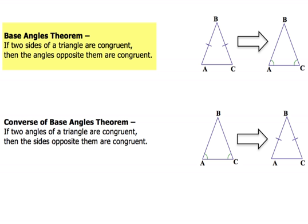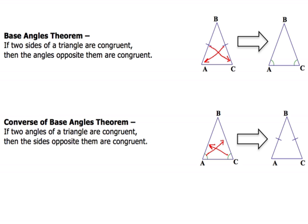The base angles theorem says: if two sides of a triangle are congruent, then the angles opposite them are congruent. So if we have two sides marked with hash marks, the angles opposite them — angles A and C — are congruent. The converse is also true: if two angles of a triangle are congruent, then the sides opposite them are also congruent. Both of these play into a lot of what we'll do with isosceles triangles.